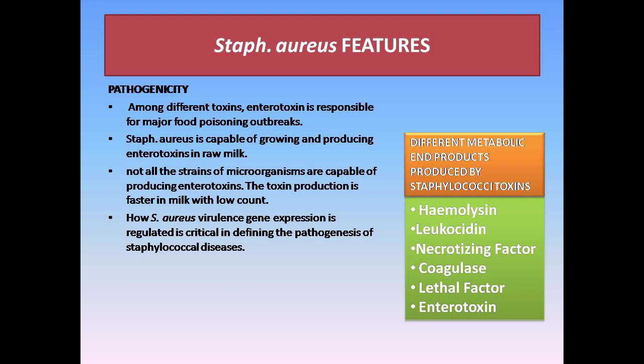Enterotoxin is responsible for major food poisoning outbreaks. Staphylococcus aureus is capable of growing and producing enterotoxin in raw milk. Not all strains of the microorganism are capable of producing enterotoxin. Toxin production is faster in milk with low bacterial count. S. aureus virulence gene expression is critical in defining the pathogenesis of staphylococcal diseases. Different metabolic by-products and toxins include hemolysin, leukocidin, necrotizing factor, coagulase, lethal factor, and enterotoxin.